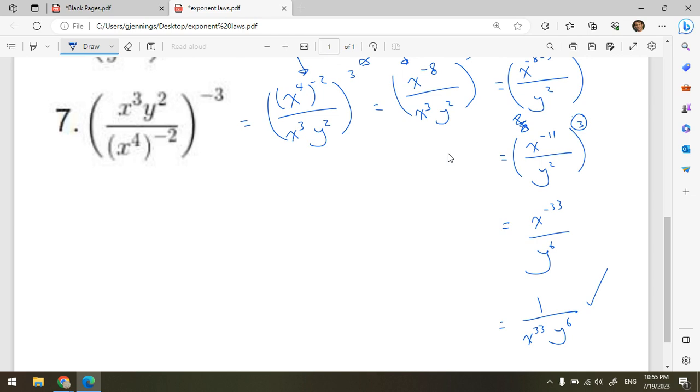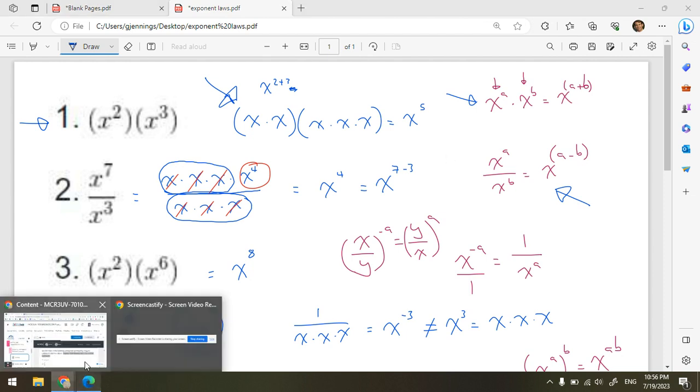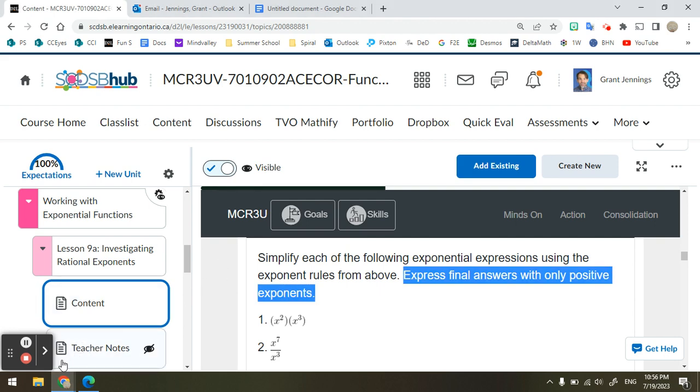So those are absolutely foundational rules to your algebraic success going forward. They are the basic exponent laws. These want to be at the level of unconscious competence. You just know them, you apply them, you don't have to think about them too much. And if you do forget them, use this strategy of expand the expressions with multiplication to remind yourself so that you'll never forget. Thanks for showing up for your learning, everyone. And any questions, hit me up by email. Bye for now.